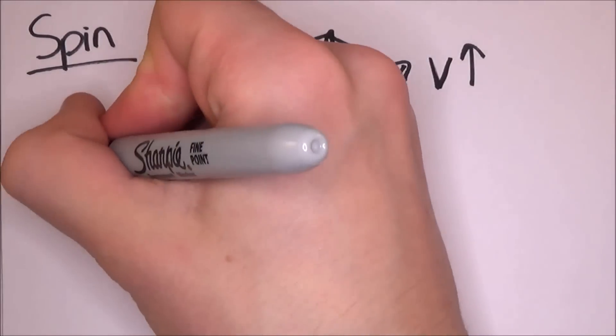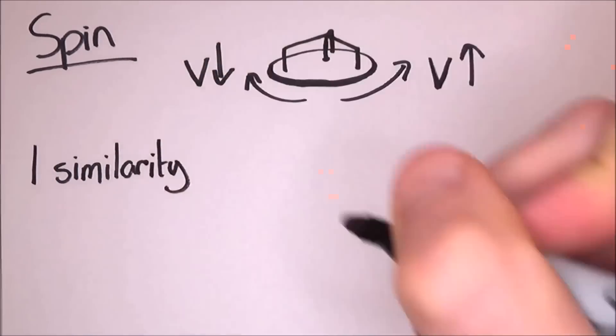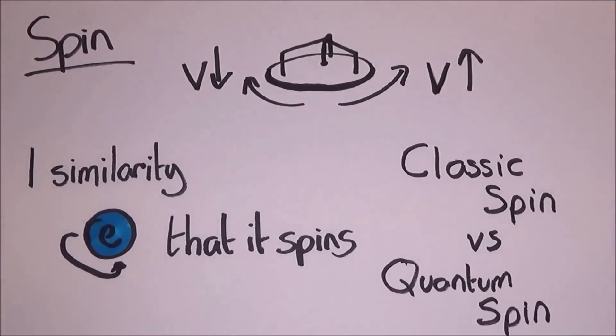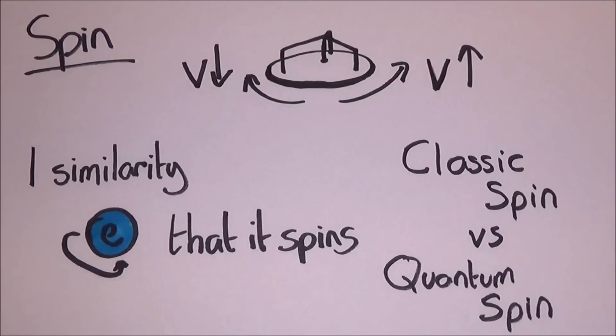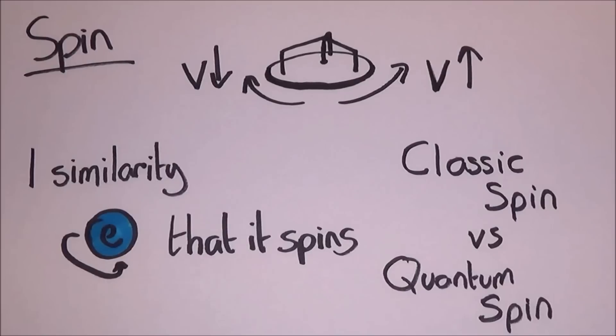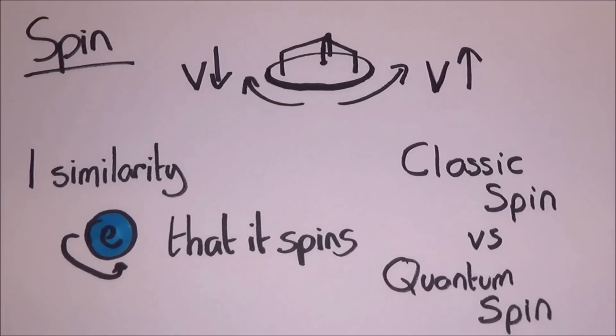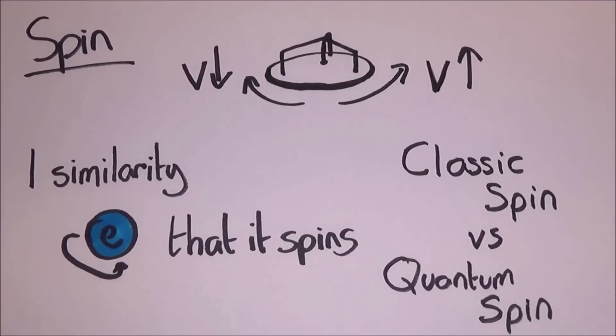This is the same as spin in one way, that it spins. The idea of classic spin can give us a decent understanding of spin, but it only takes us so far. Now spin in the quantum world is different and not always as it seems, but yeah, that's about it. The only similarity they have is that a roundabout spins and an electron spins.